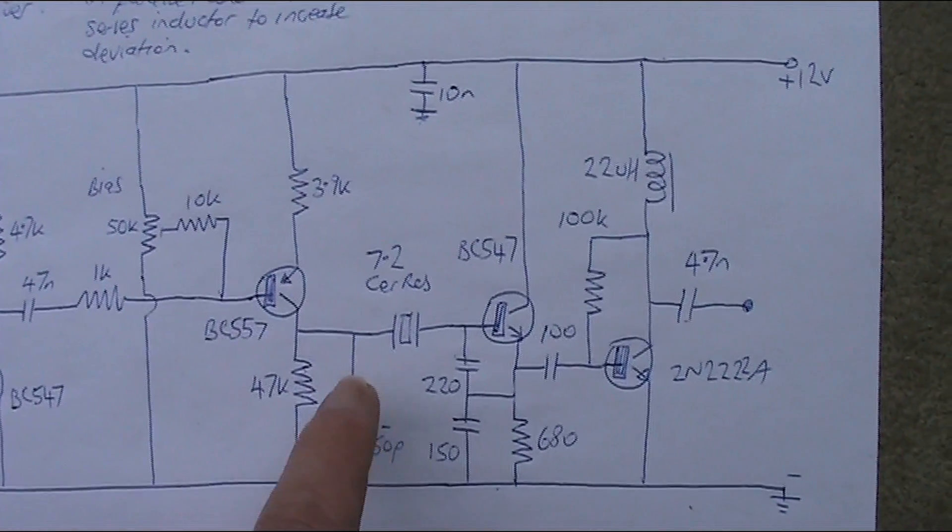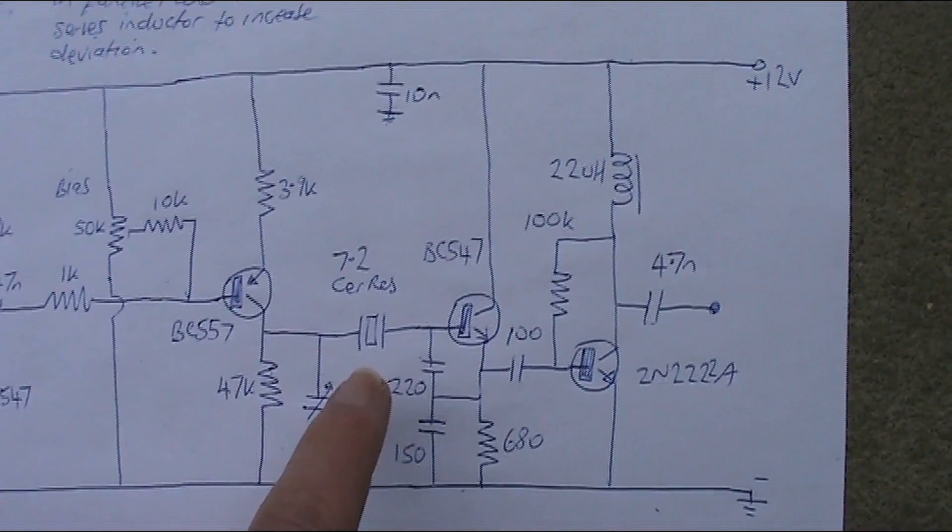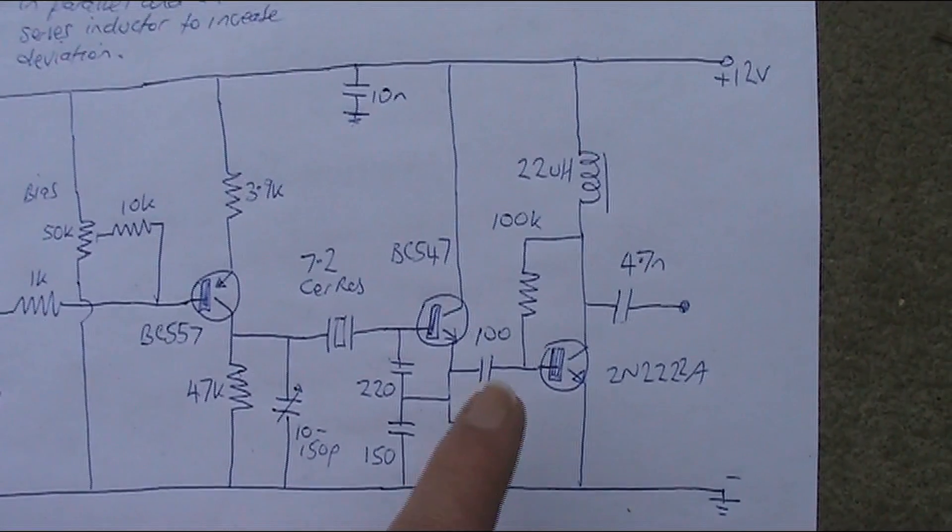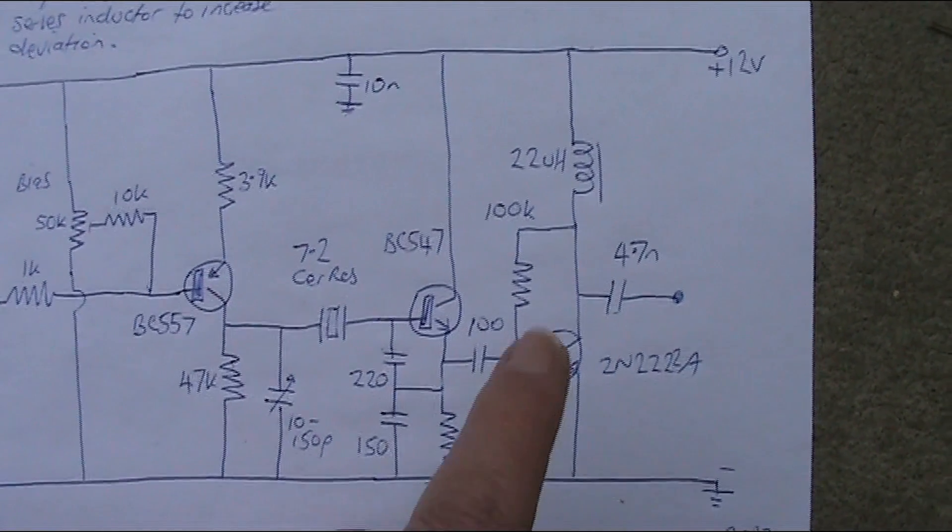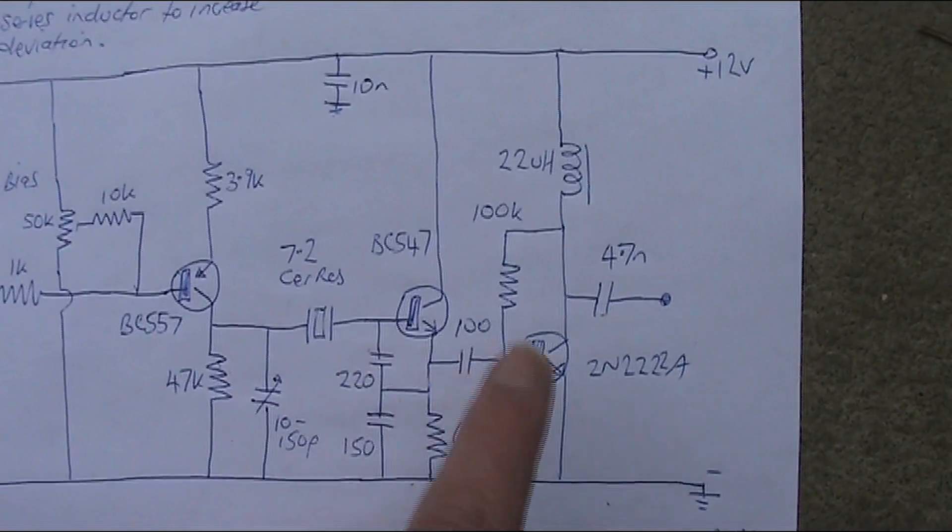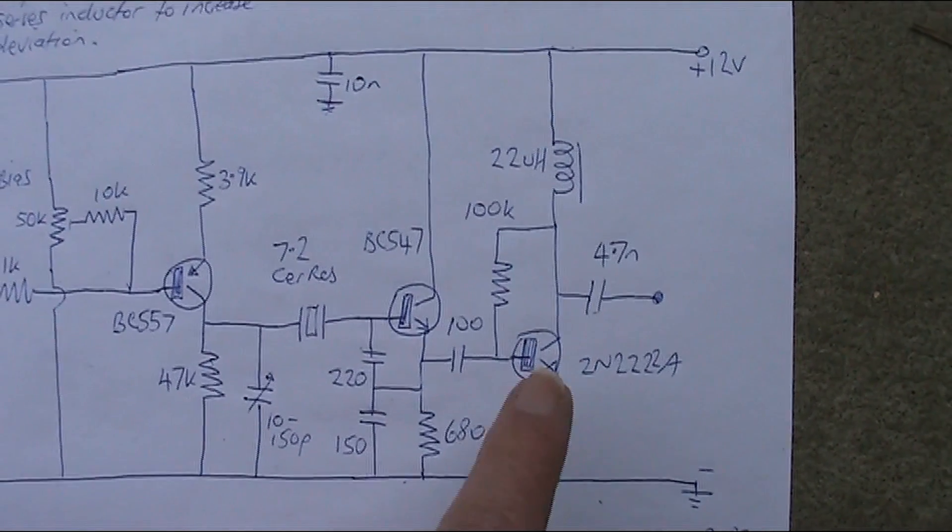And then we've just got a Colpitts oscillator, pretty standard circuit. That's on 7 MHz. And then one transistor buffer that gives you a bit of amplification, a bit of isolation. There's still a bit of frequency change when you adjust the impedance loading on here, so just bear that in mind.